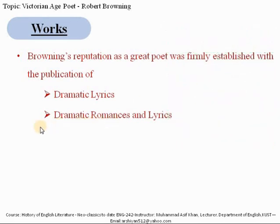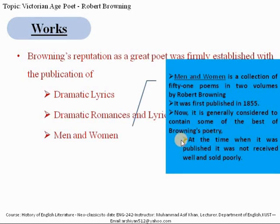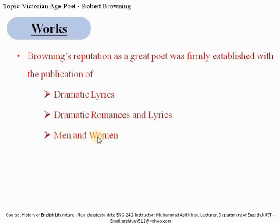The third important work is Men and Women, a collection of 51 poems published in two volumes in 1855. This collection is generally considered to contain some of the best-known poetry of Browning. When it was actually published it was not received well and sold poorly, but its reputation and fame changed later on, and it is now categorized among the best works of Browning's poetry.